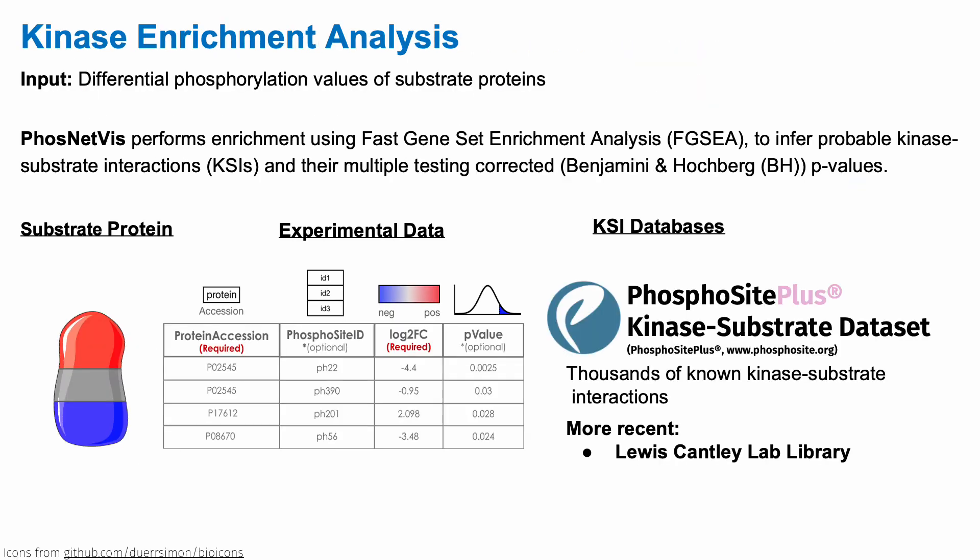To answer the first question, which is how to infer the aberrant kinases, we typically perform a kinase enrichment analysis. Here we try to probabilistically predict which kinase is most likely to have changed the phosphorylation of the proteins that we see in our proteomics experiment. And for this, in PhosNetViz, we use fast gene set enrichment analysis, but there are also many others. And in order to do enrichment analysis, we need a database of known kinase substrate interactions. And for that, we use PhosphoSitePlus.